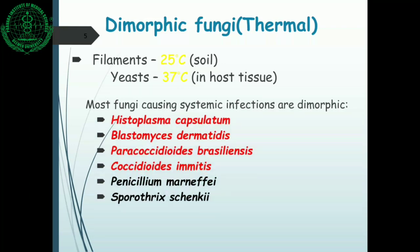The list of systemic mycotic infection causative agents includes Histoplasma capsulatum, Blastomyces dermatitidis, Paracoccidioides brasiliensis, and Coccidioides immitis. Also listed among the dimorphic fungi are Penicillium marneffei, which is actually an opportunistic agent, and Sporothrix, which has already been covered under subcutaneous infections.